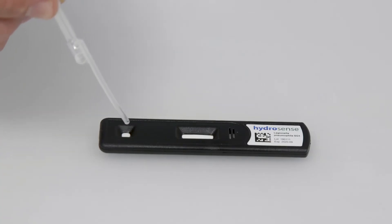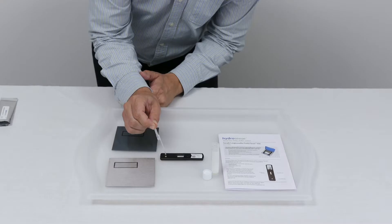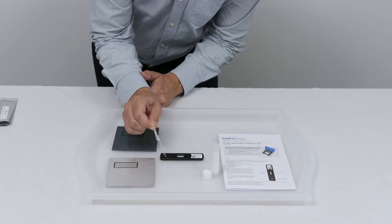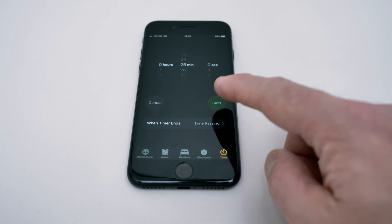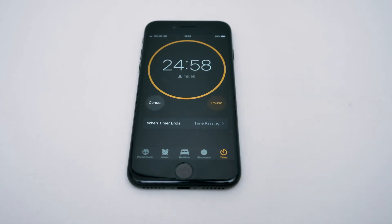To transfer the liquid from the tube into the cassette, we press the top bulb again by holding the pipette over the test. Make sure all the liquid is dispensed, and then we will start a timer for 25 minutes.